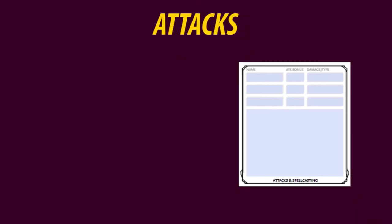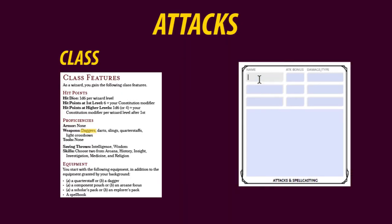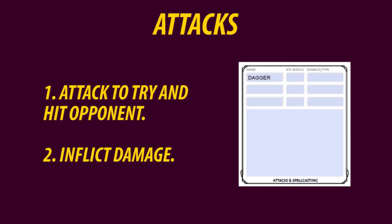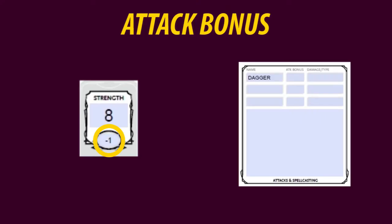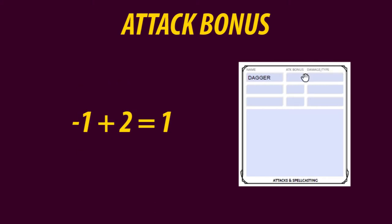Let's move on to the next section where you can write down what your weapons and spells can achieve. For demonstration, let's say my character wields a dagger, which he is proficient in. Attacking takes place in two steps: first you attack to try and hit your opponent, then you inflict the damage. Your attack bonus comes from your strength modifier — in my case that's −1 — but if you're proficient in that weapon, you add the proficiency bonus too, which would give an attack bonus of −1 + 2 = +1.